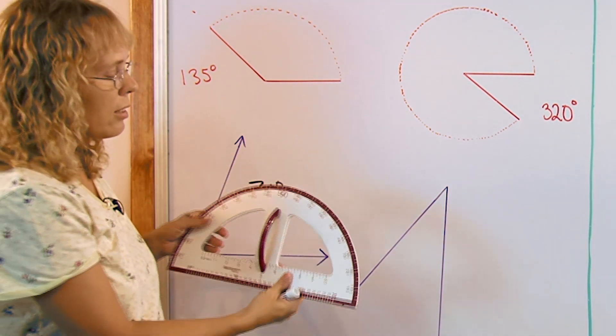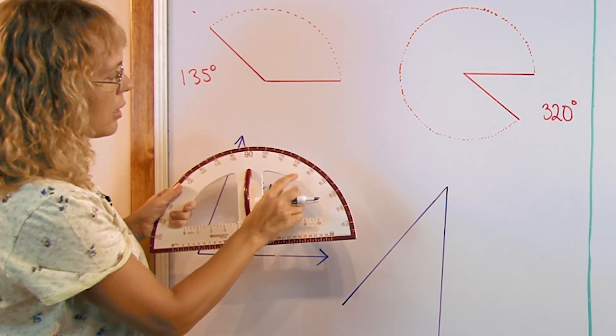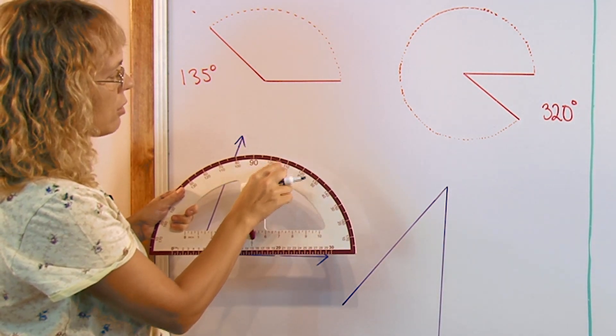And most protractors have marks here, so you can see the individual degrees. This one just goes by fives, each five is marked.